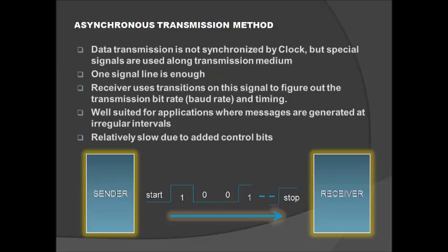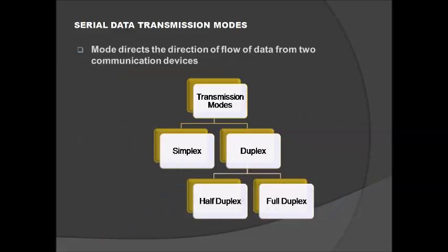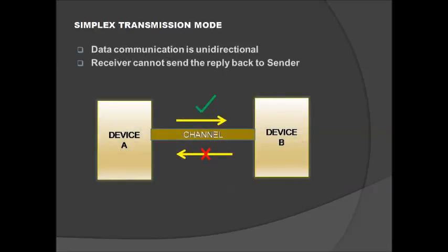The next topic is serial data transmission modes — the direction of data flow between two communicating devices. We have two types of transmission modes based on the direction of data flow: simplex and duplex. Under duplex, we have two further types: half duplex and full duplex. In simplex transmission mode, as the name implies, data communication is unidirectional. A receiver cannot send a reply back to the sender — data can be communicated from device A to device B but not from device B to device A.